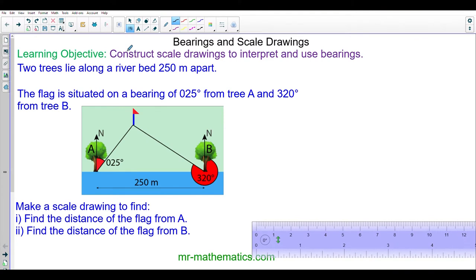Hello and welcome to our lesson on bearings and scale drawings. We're going to construct a scale drawing of this diagram where the flag is situated on a bearing of 025 degrees from A and 320 degrees from tree B.